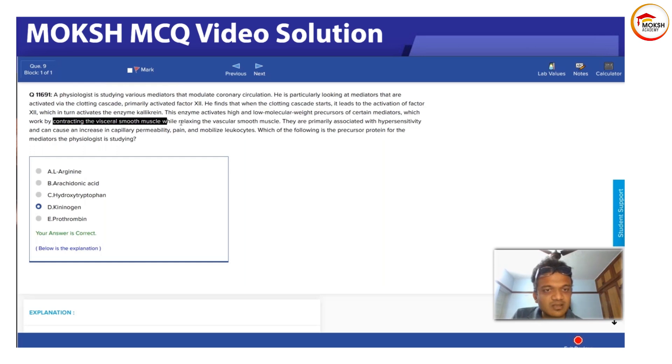This precursor works by contracting visceral smooth muscle while relaxing vascular smooth muscle. They are primarily associated with hypersensitivity and can cause increase in capillary permeability, pain, and mobilized leukocytes.